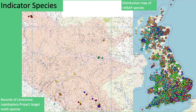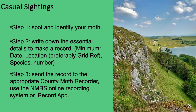Since moths are so widespread, found in many different habitats and very sensitive to changes, they're particularly useful as indicator species. Monitoring their numbers and ranges can give us vital clues to changes in our environment, such as the effects of new farming practices, pesticides, air pollution and climate change. Simply by noting down your sightings of moths — whether from your kitchen window, back garden moth trap, or remote mountaintop — you can make a real contribution to their conservation across the UK and implications on the wider environment.